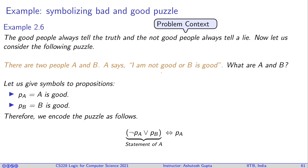Now we have to ask ourselves: is this formula satisfiable? If the formula is satisfiable and you can assign values to PA and PB such that the formula holds, then you can say that this puzzle has a solution. We have not yet discussed what satisfiable means or what values can potentially be assigned to PA or PB — we will come to that in the next lecture. But the idea should be clear: we can translate real-world problems into a formula and then ask how to solve them.